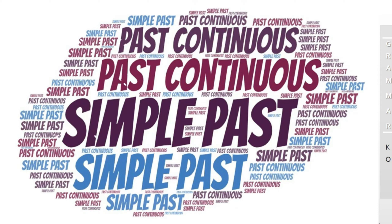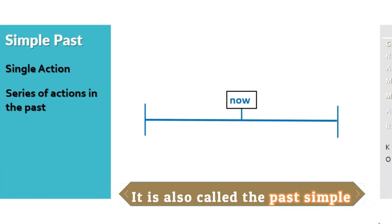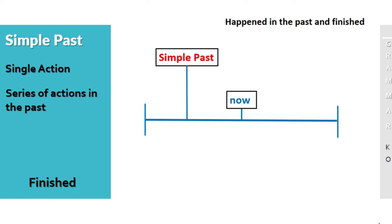Today we're going to study the past continuous and the simple past. The simple past is a single action or a series of actions in the past, and it's finished. Here in the timeline we have the simple past — it happened in the past and it's finished.